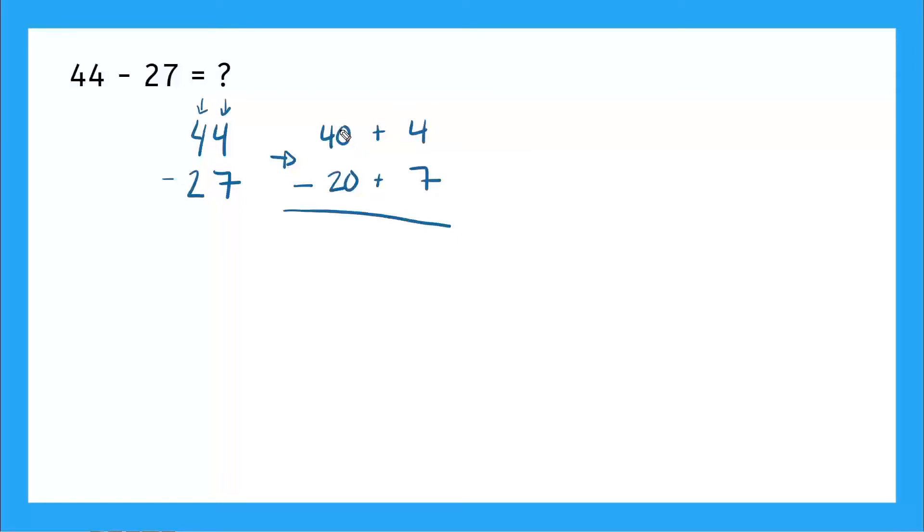So if we go over to our neighbor here in the tens place, we have a 40 here. Now I'm going to borrow a 10 from 40. So that means I'm subtracting 10 from 40. So this becomes 30. And then I'm taking that 10 and I'm going to add it, so plus 10 here to my 4. So now this 4 becomes 14.